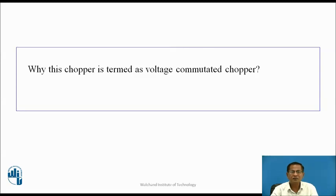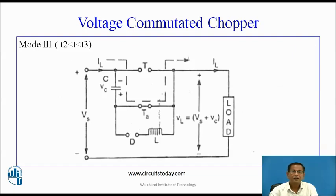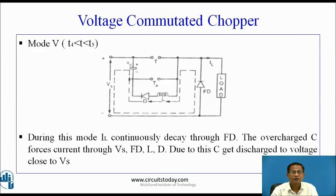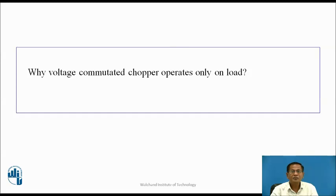Why is this chopper termed a voltage commutated chopper? In this chopper, the main thyristor is turned off by applying the charged capacitor voltage across the main conducting device. The charged capacitor is placed across T1, so the reverse voltage appears across T1 and the thyristor turns off — that is why it is called the voltage commutated chopper. Why does the voltage commutated chopper operate only on load? If no load is connected, the capacitor will not charge and will not get sufficient energy to turn off the main power device. That is why this chopper operates only on load.